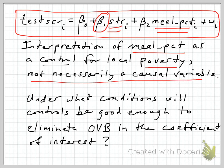We're going to interpret this meal percentage variable as essentially a control for local economic conditions, in particular poverty, which is how the meal plans often operate. Now, this is not necessarily a causal variable. You might think that if kids are getting subsidized meals they would perform better on tests, but in fact we're going to find that beta 2 is negative, because the meal percentage variable is really serving as a proxy — a stand-in for local poverty conditions. It's often used because we often have rather imperfect measures of local poverty rates, and the meal percentage is a good control variable to capture some of those things.